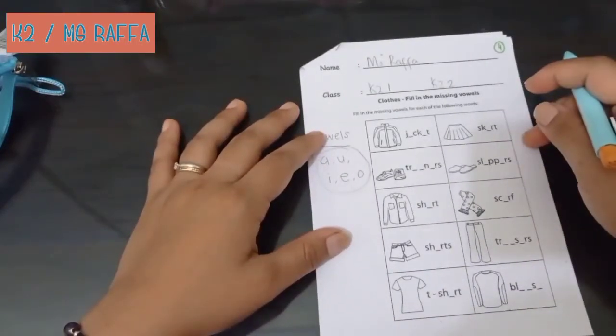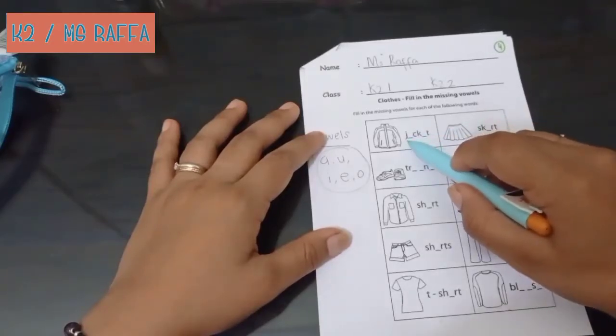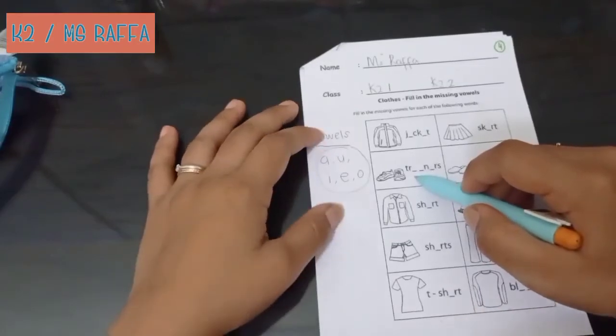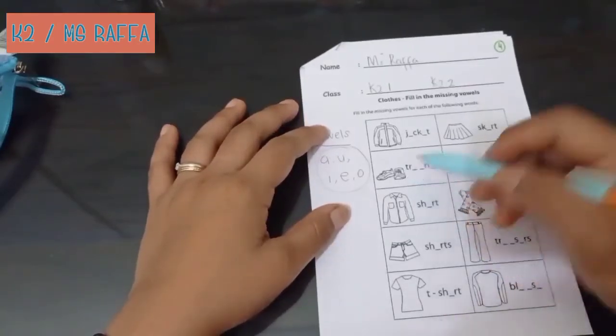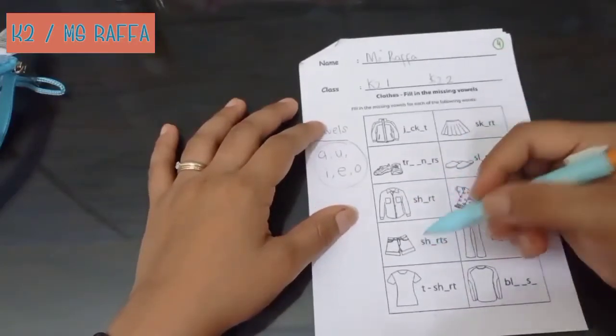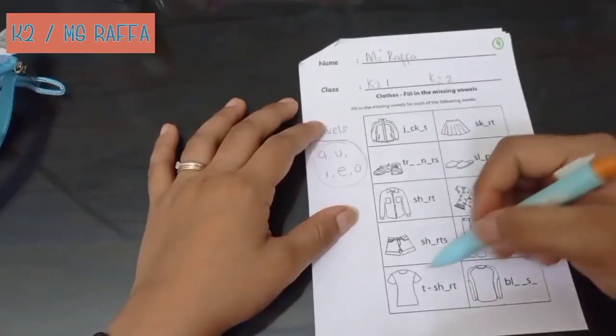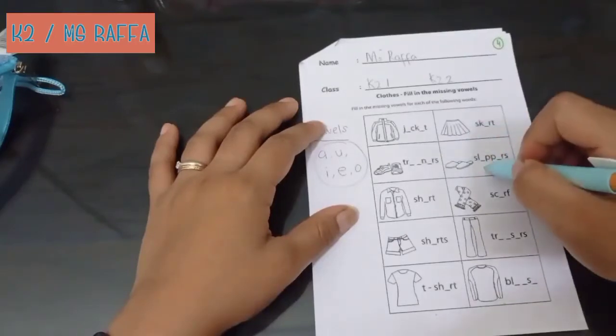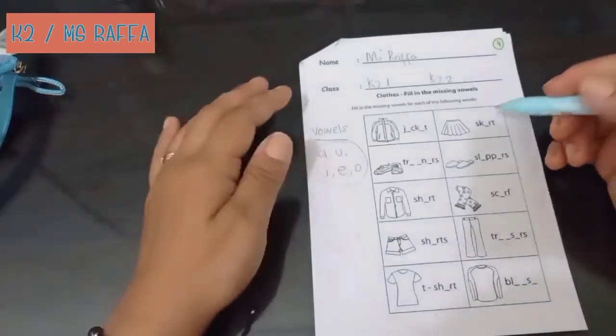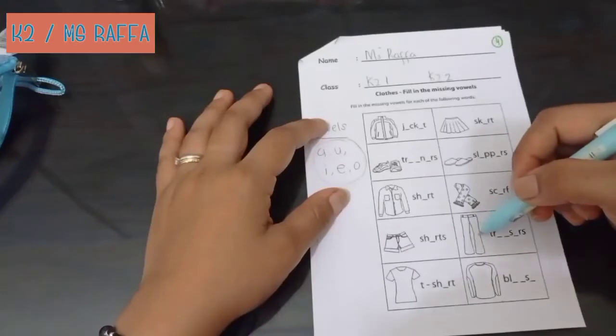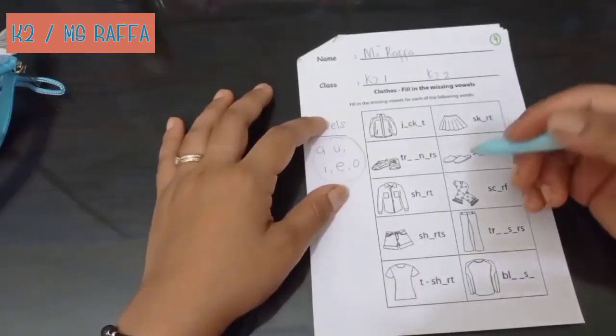Okay. Like this one. Do you remember? What is this? Start from letter J. Jacket. Jacket. This one. This is trainers. Trainers means sepatu olahraga. This is shirt, baju berkerah. Shorts, celana pendek. T-shirt, kaos, baju kaos. Skirt, rok. This one, slippers. Sandal. Scarf, syal. Trousers, celana panjang. And the last is blouse, baju blouse.